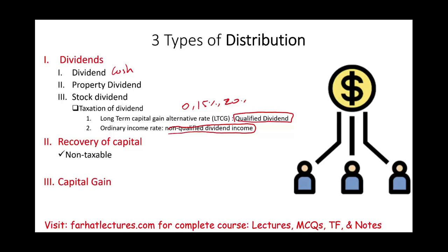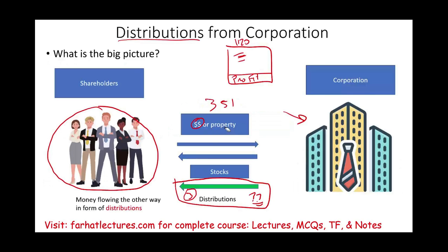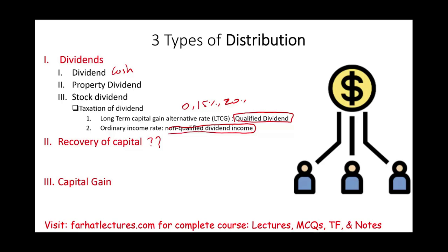The distribution might also be considered recovery of capital. Recovery of capital means we are giving you your money back. At the beginning when the corporation was formed, shareholders contributed cash and property. If a distribution is considered ROC, it is giving you back your money — that's a recovery of the basis. Recovery of capital is not taxable; it's a tax-free transaction.